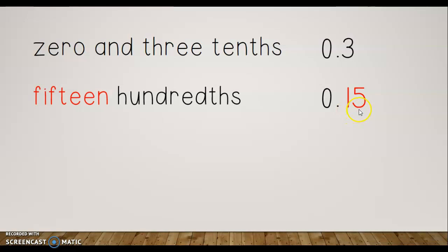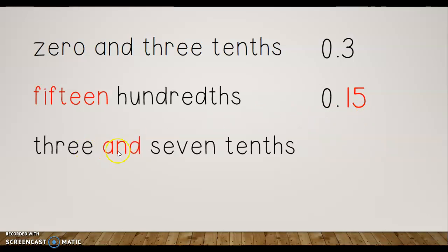Let's try 'three and seven tenths.' The word 'and' tells me that what's before it is my wholes, so I write three, then my decimal point for 'and.' Then it says seven tenths, so behind the decimal I need to see the number seven, and it needs to be only in the tenths place.